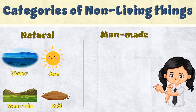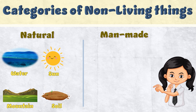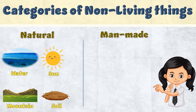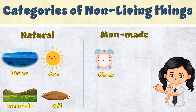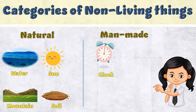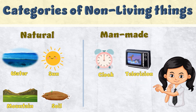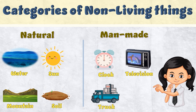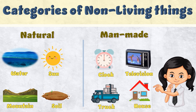— they all are natural, but at the same time they are non-living things. Now, let's see some examples of man-made non-living things. Clock — it is made by man. Television, truck, house.